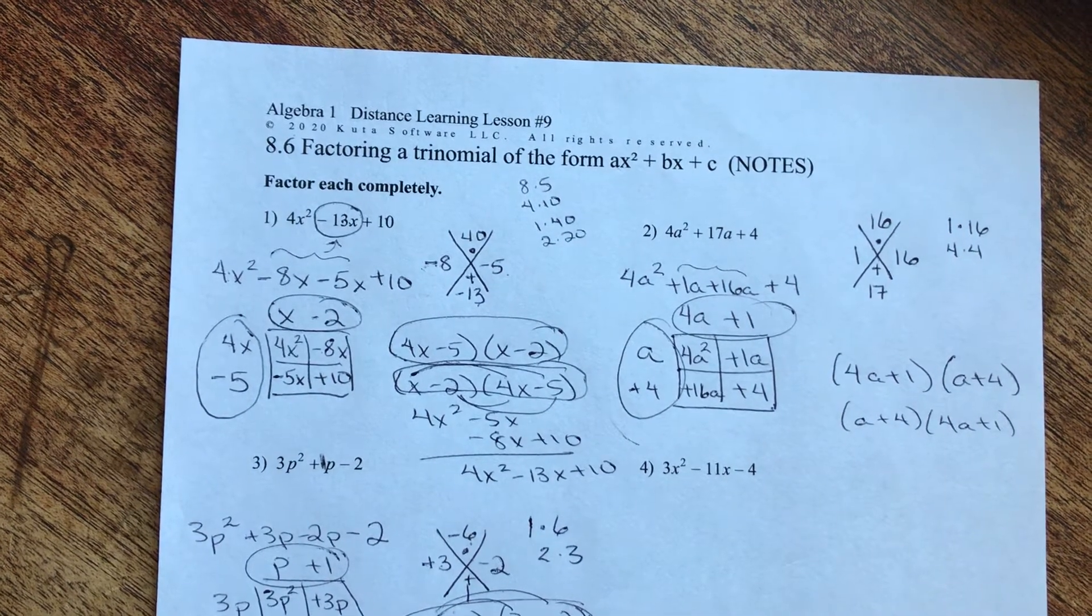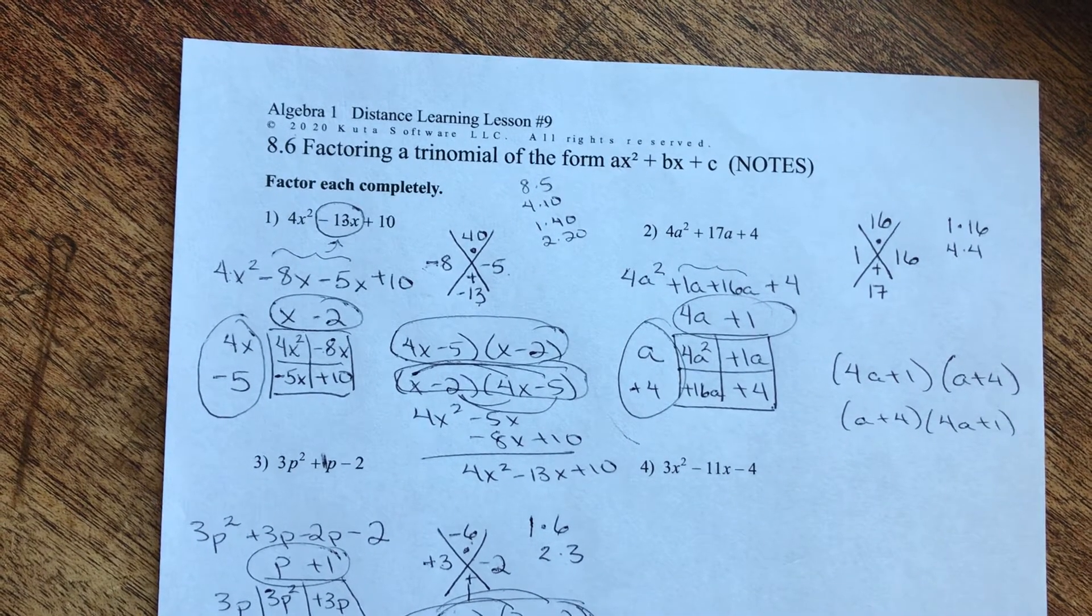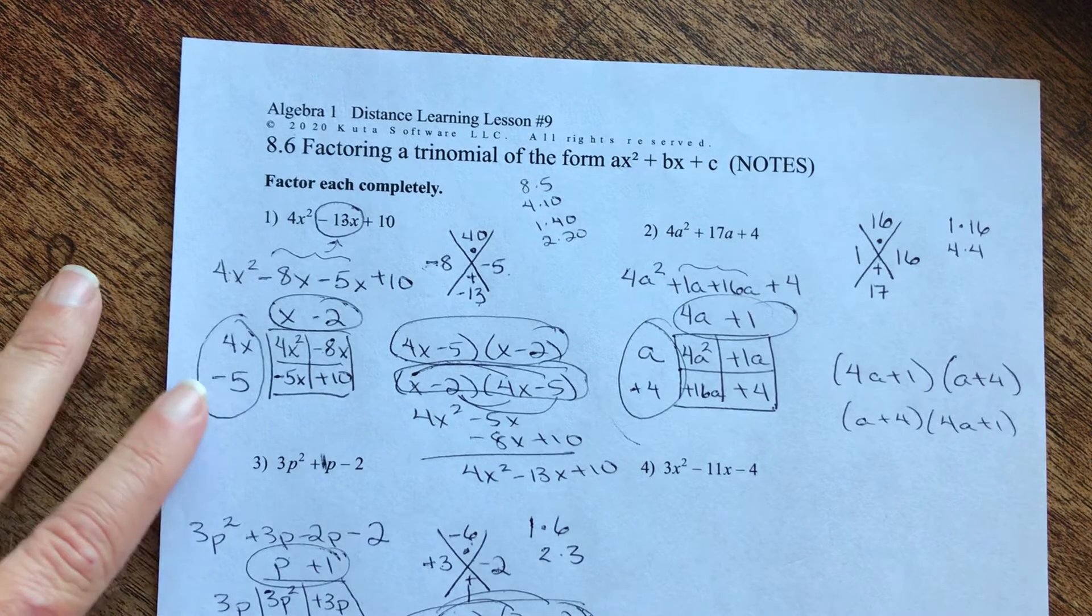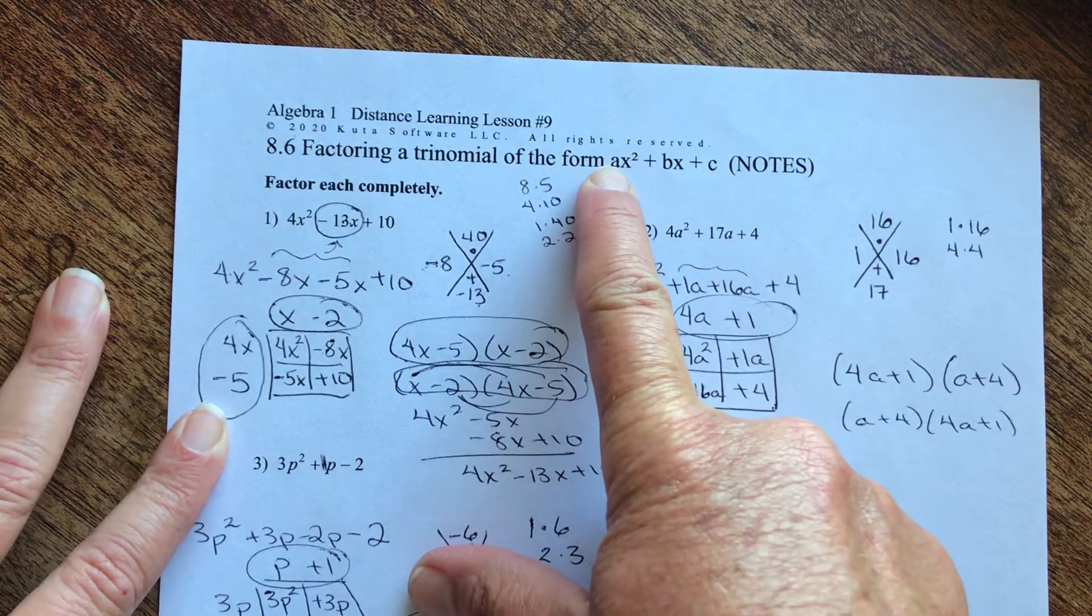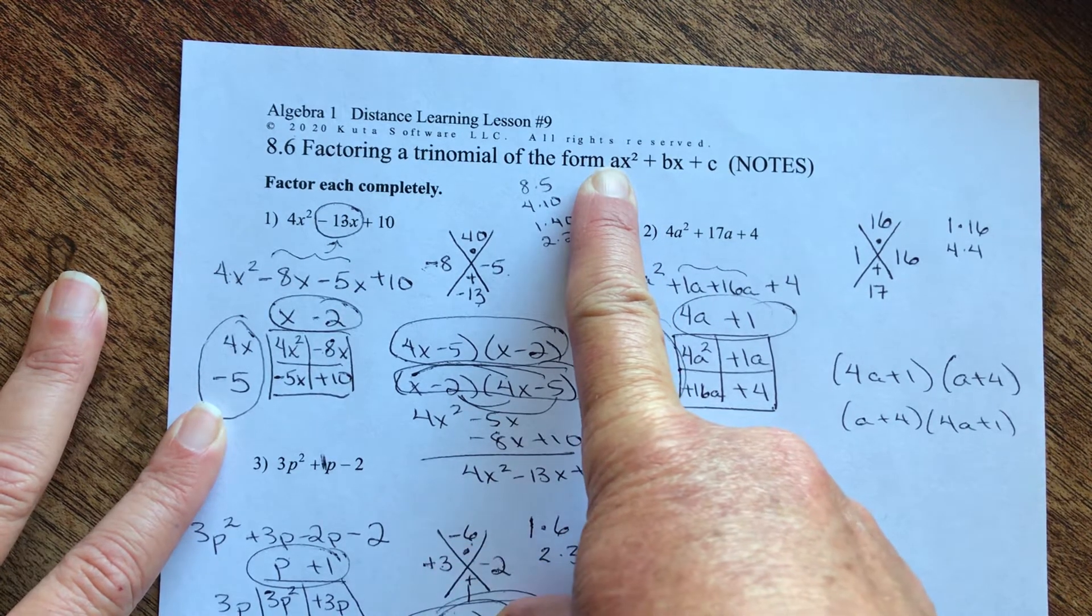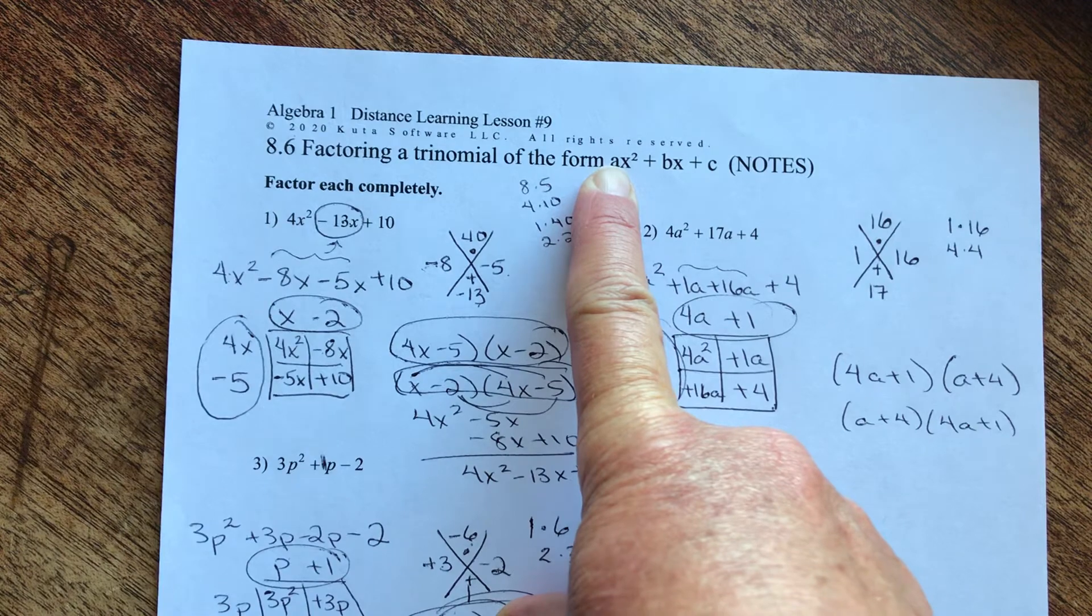Welcome back, guys. We're on the 8-6, factoring the trinomial of the form AX squared plus BX plus C. Remember, this is the one where it's not a simple trinomial. The A coefficient is something that's not 1, so it could be any number.